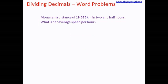Let's check one more example. Mona ran a distance of 19.625 kilometers in two and a half hours. What is her average speed per hour? The distance is 19.625 and the hours are 2.5, so we divide 19.625 by 2.5 to get the average speed per hour.